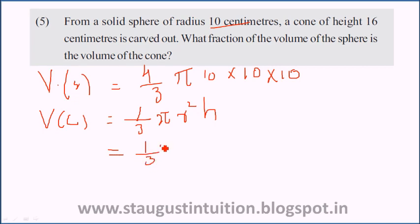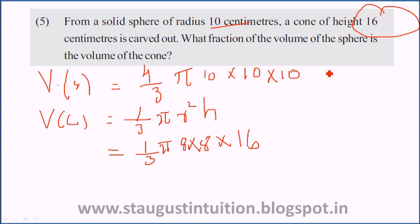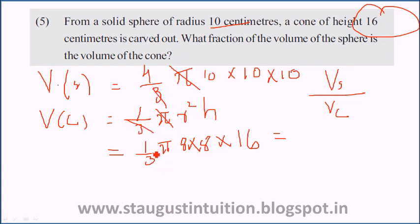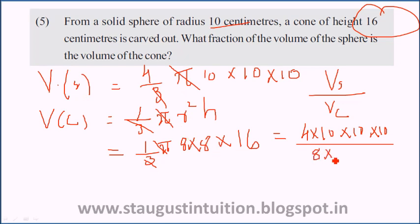The height h is equal to 16. We divide the volume of the cone by the volume of the sphere: [(1/3)π × 8² × 16] divided by [(4/3)π × 10³], simplifying to get the final fraction.